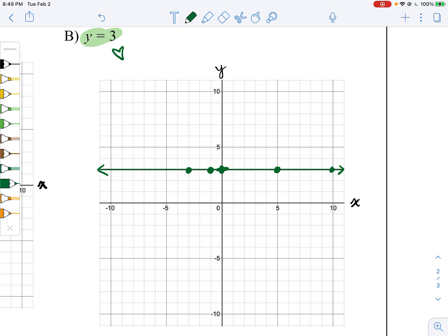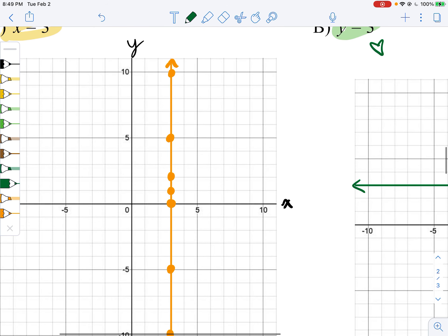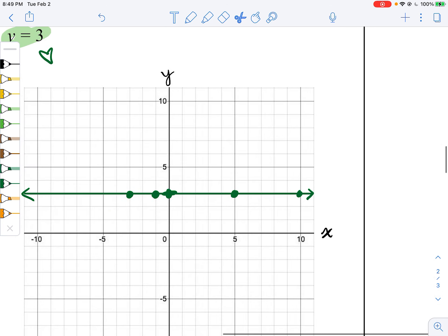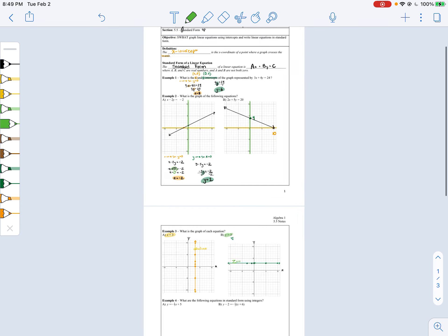Remember that these are two kinds of lines that have very special slope. Vertical lines always have undefined slope. And horizontal lines always have a slope of 0. So that was a nice break. Let's go back to standard form.